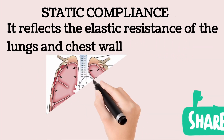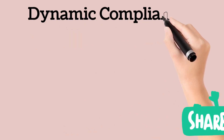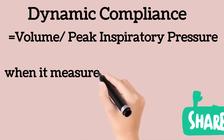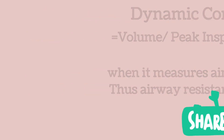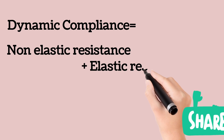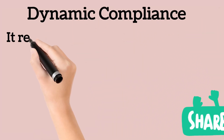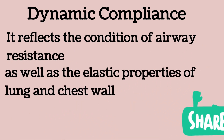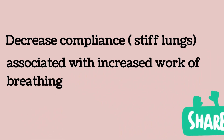Static compliance reflects the elastic resistance of the lung and the chest wall. Dynamic compliance is calculated by dividing the volume by the peak inspiratory pressure, and is measured when airflow is present. Because airflow is present, airway resistance becomes a factor. Thus, dynamic compliance reflects the condition of the airway resistance as well as the elastic properties of the lung and chest wall. A decrease in compliance means an increase in the work of breathing.